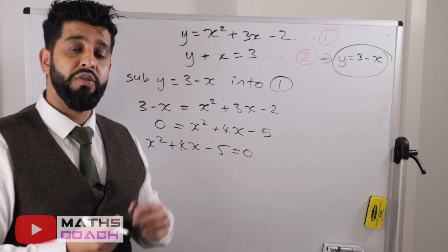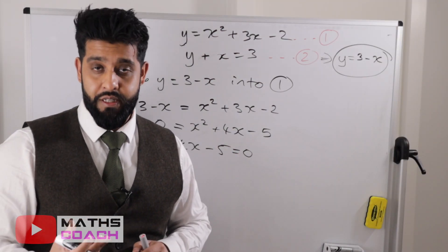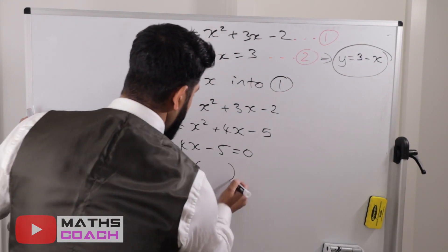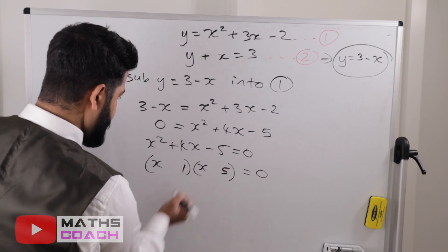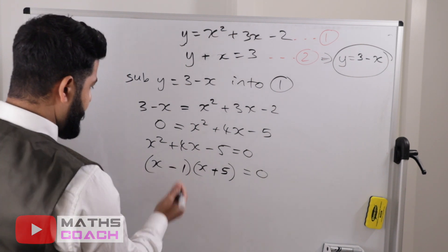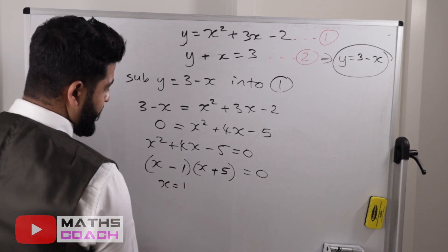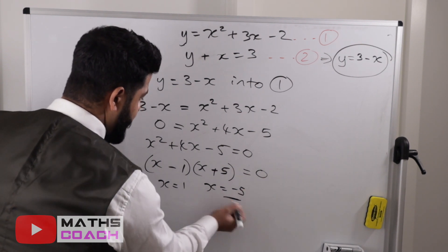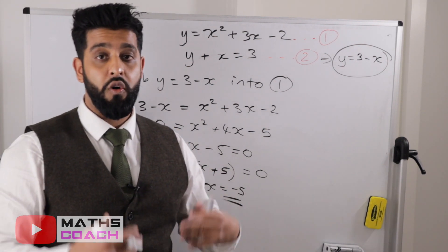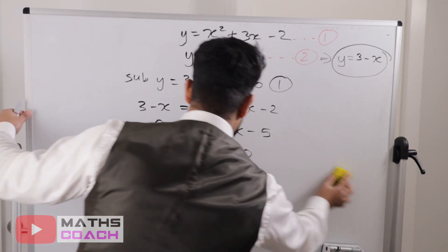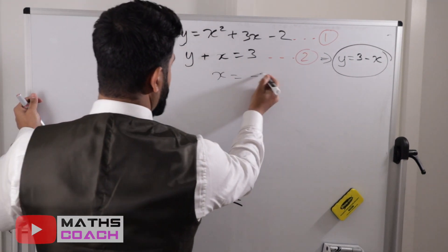We now need to factorize this quadratic to find x. I'll put the double brackets in: x goes in each bracket. I need factors of 5 that work — so 5 and 1, checking the signs: x minus 1 in one bracket and x plus 5 in the other. Therefore x equals 1 or x equals minus 5. Those are our two values of x.